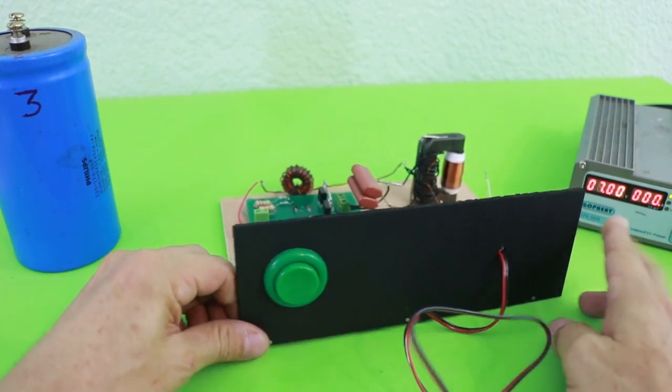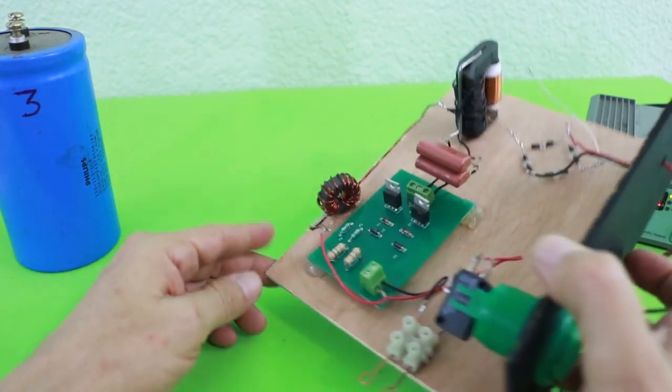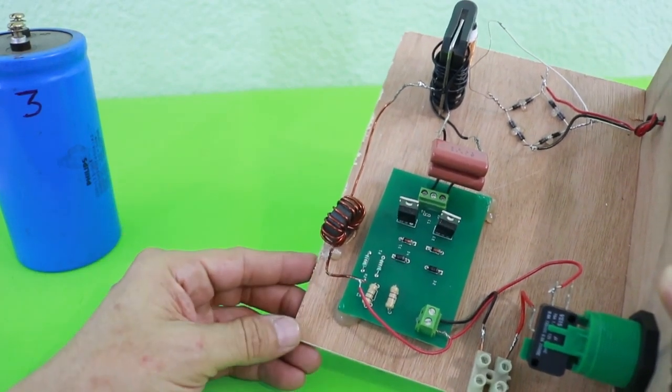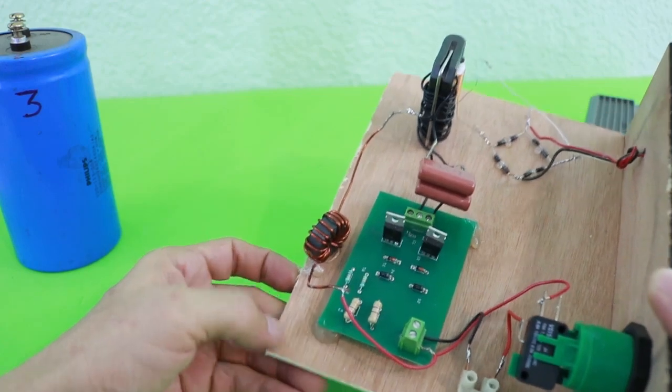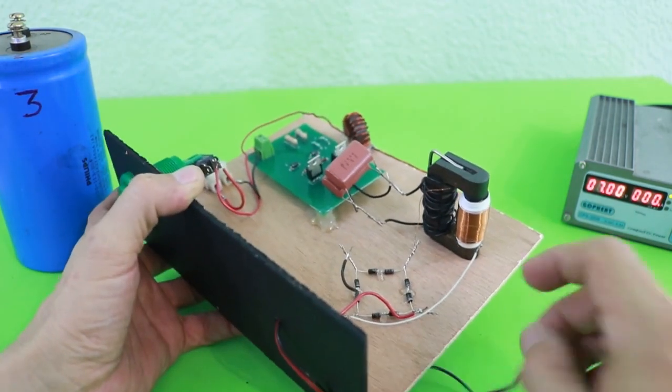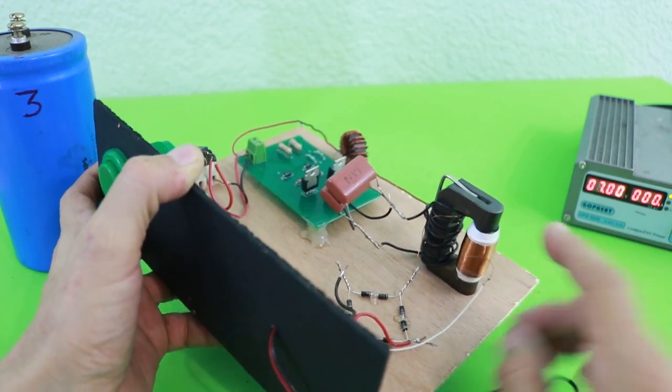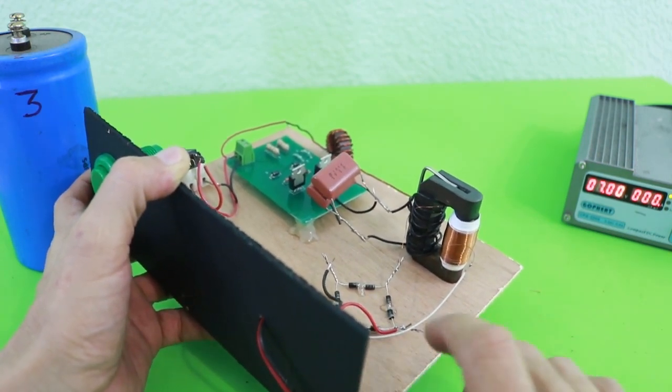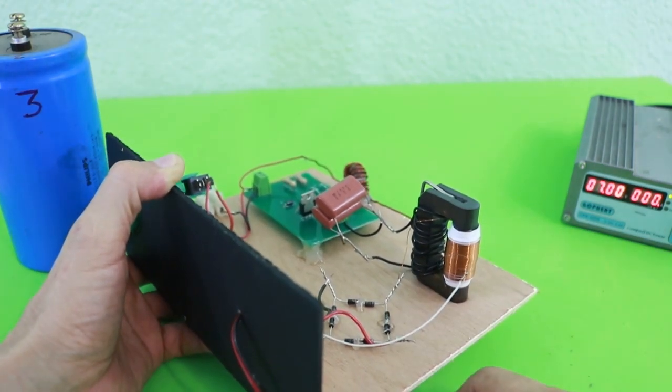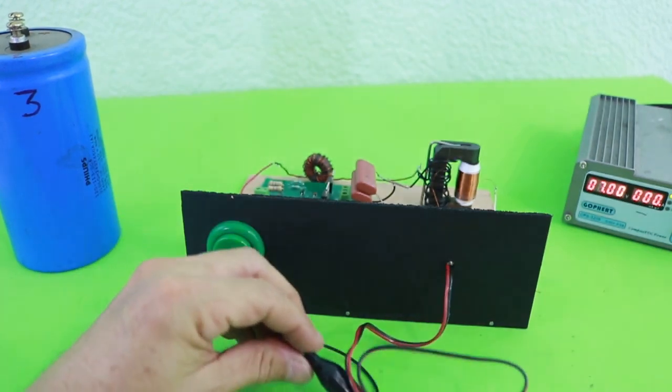The construction is relatively simple. It is based on a Mazzilli or Royer driver, which is an oscillator circuit to drive the high voltage transformer. This transformer must be handmade. It is a high frequency transformer with a ferrite core, and we have to build the primary coil and the high voltage secondary coil, and from here rectify the output to obtain high voltage DC.